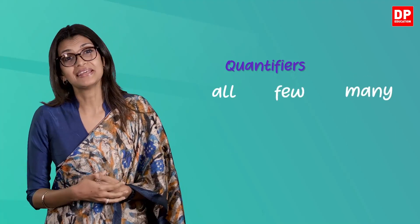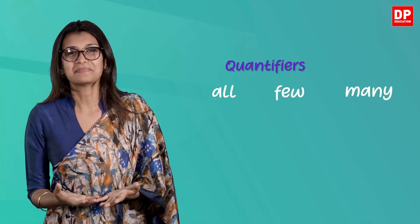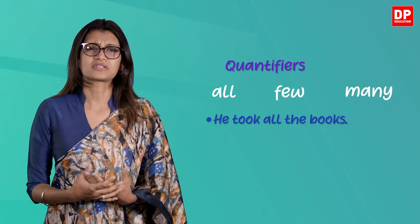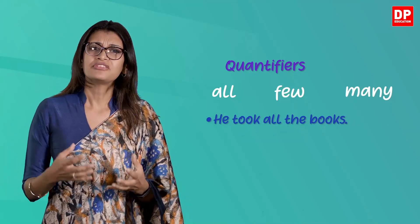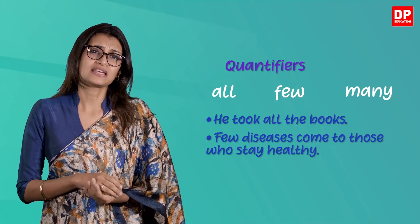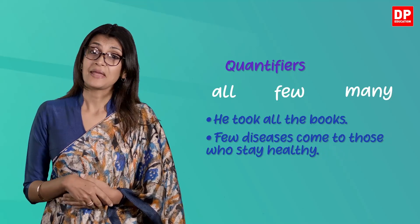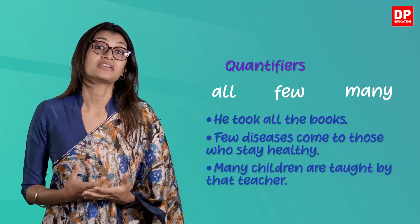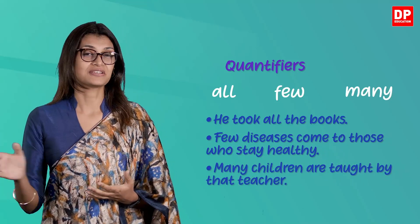Quantifiers are determiners that indicate how much or how little of the noun is being discussed. They include words such as all, few, and many. For example, he took all the books. Few diseases come to those who stay healthy. Many children are taught by that teacher.